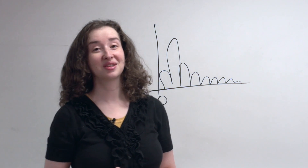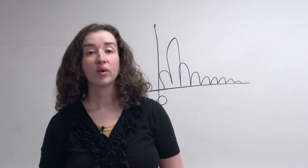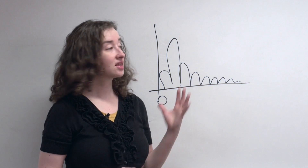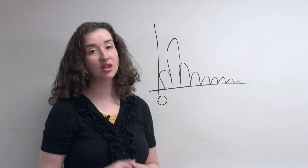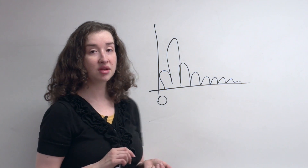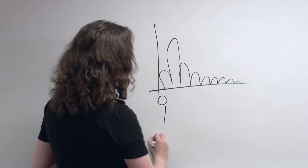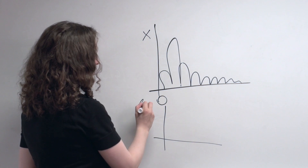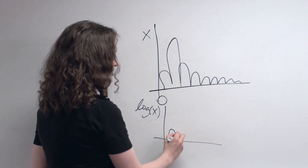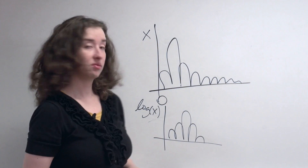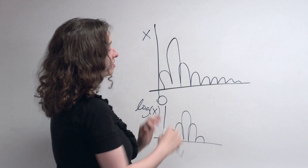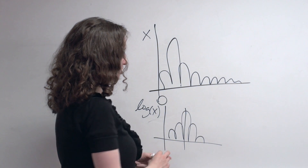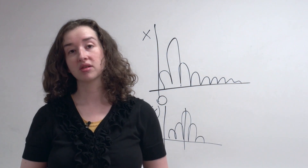There are lots of different things we could do to a right-skewed distribution to make it look more normal. We could take the reciprocal — one over each value — and it would look more normal. We could take the square root of each value and it would likely look more normal. However, the suggestion I'm going to make is to take the log. If this is the histogram of your values of x, and we make a histogram of log x, it's going to look more normal. The high values get squished in, the lower values are squished less, and we end up with a distribution that's approximately symmetric and approximately normal.